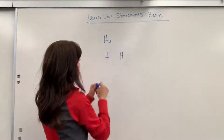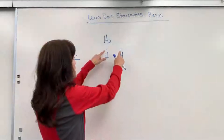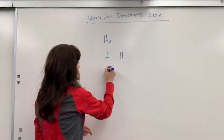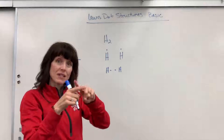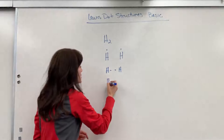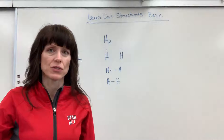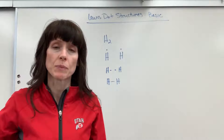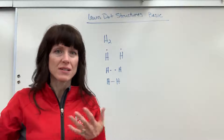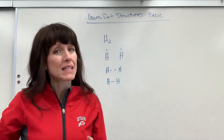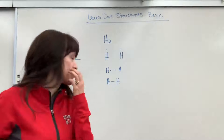So looking at our hydrogen here, they each have one electron and they're each going to share those electrons — electron here, electron here. They come together and share, and when they share, that is a bond. So that's how you draw the Lewis dot structure for hydrogen. Now, hydrogen is a little special. It's in the 1s energy level and subshell, so it can maximum fit two electrons. Hydrogen and helium can only fit two electrons.